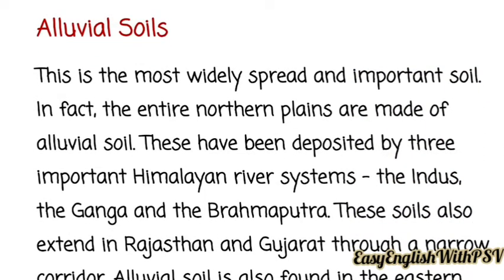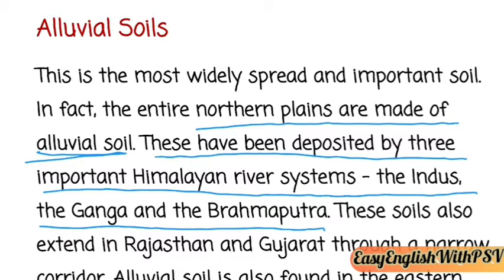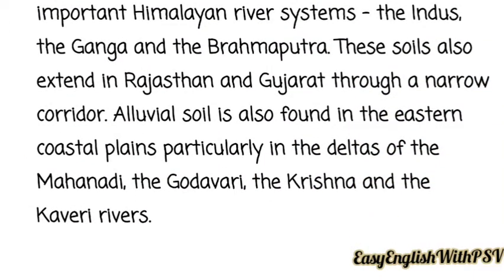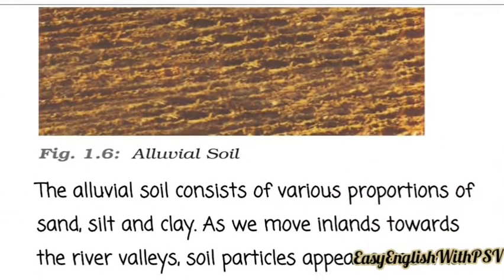The first and most important soil type is alluvial soil. This is the most widely spread and important soil. The entire northern plains are made of alluvial soil, deposited by three important Himalayan rivers: the Indus, the Ganga, and the Brahmaputra. These soils also extend into Rajasthan and Gujarat through a narrow corridor, and are found in the eastern coastal plains particularly in the deltas of the Mahanadi, Godavari, Krishna, and Kaveri rivers.